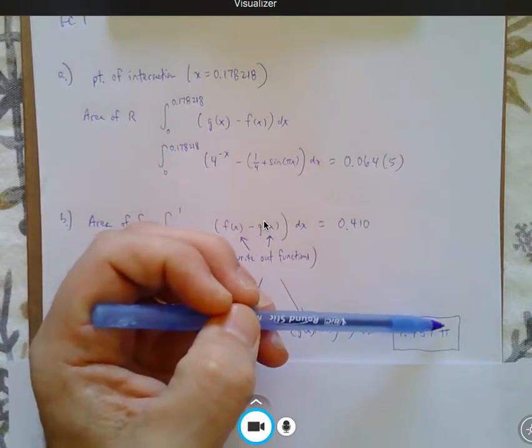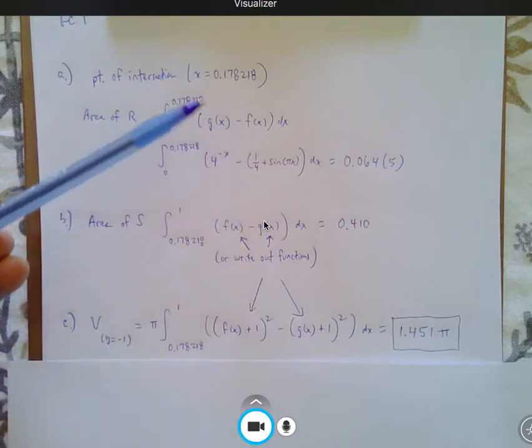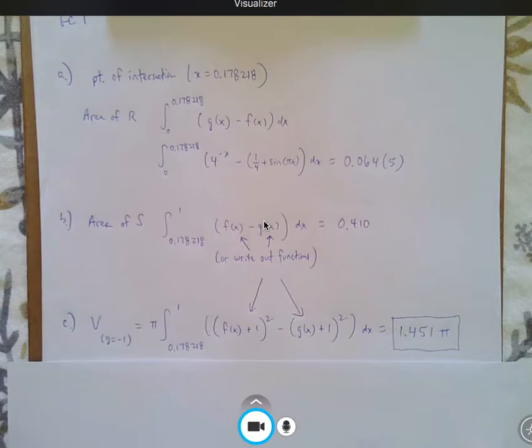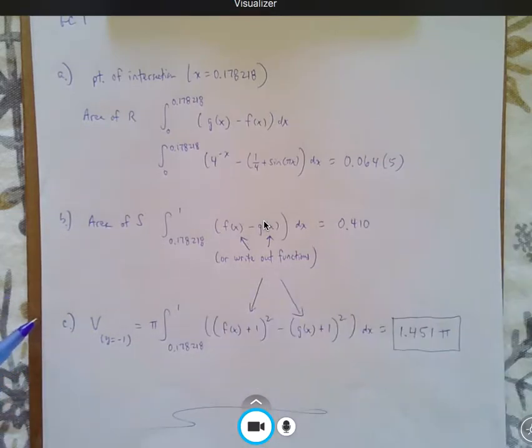I'd practice this one because you get an answer of 1.451, but then don't forget the pi. So, again, that's how I would write the answers, and you don't have to write cubic units or square units in these problems because they don't give you the units in this problem. This was a pretty standard question, and I would think you did well on that one.